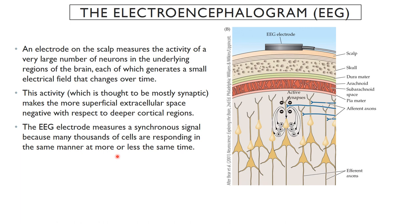The EEG electrode is placed on the scalp and measures the activity of a very large number of neurons in the underlying regions of the brain. Each individual neuron generates a very small electrical field that changes over time, changing with how much activity passes through those neurons. From physics, we know there's an electrical current that passes across the membranes of neurons with a voltage associated with that. Whenever you have a current passing through neurons, it creates an electrical field, and the EEG electrode can detect that field, especially when overall activity is synchronous.